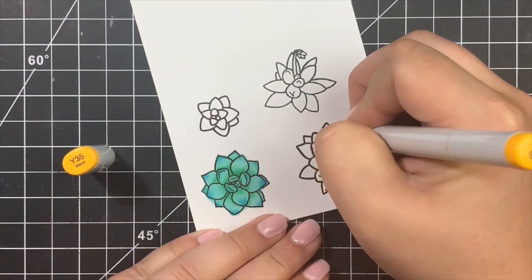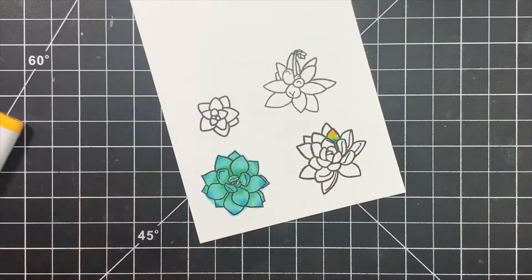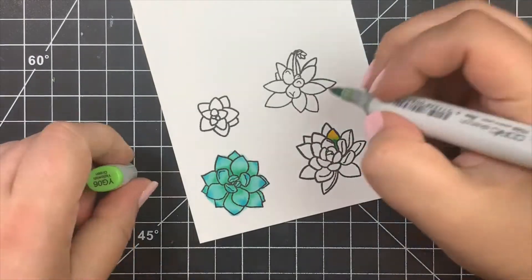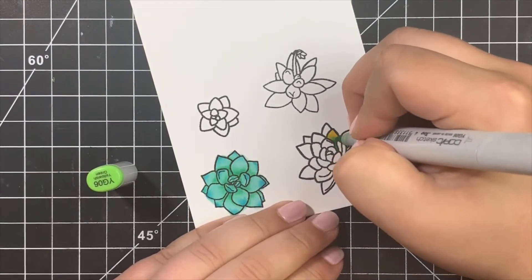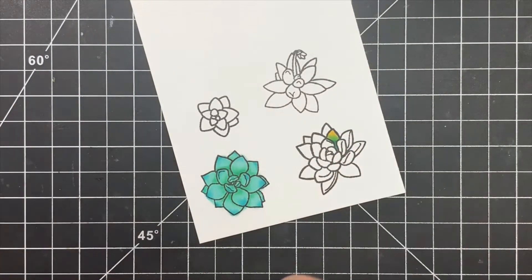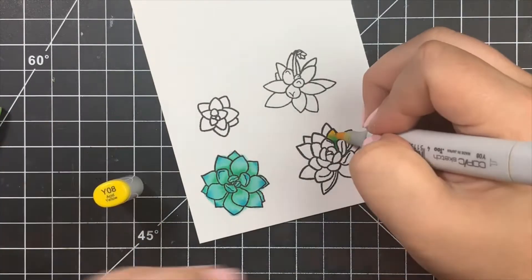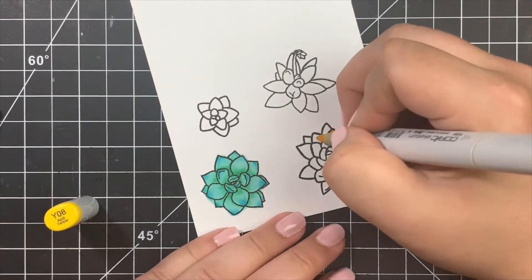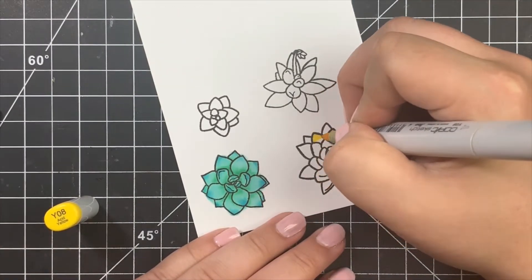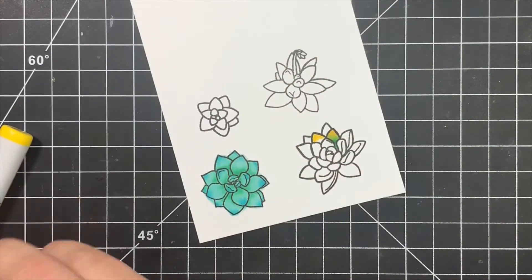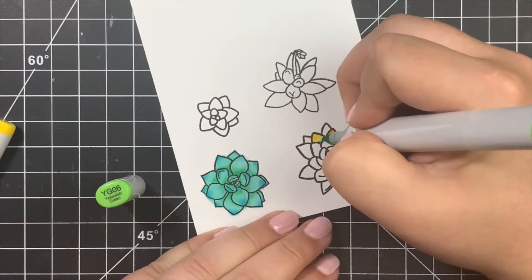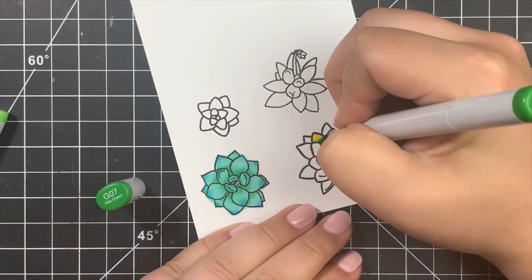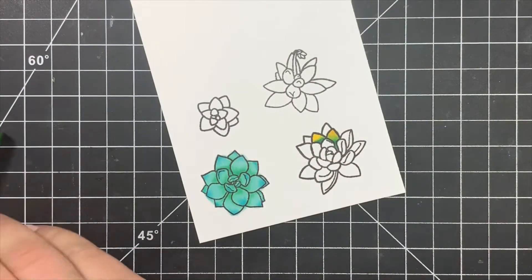Next I'm going back in with my lightest colors to get the YG and the Y to blend a little bit. You can see once I added that green they didn't really blend so well, so going back in with that Y08 creates more of a seamless blend where the greens meet the yellows. I'm going to show you one more petal doing this the same exact way, and then I will finish up this entire succulent using the same color combination and technique.